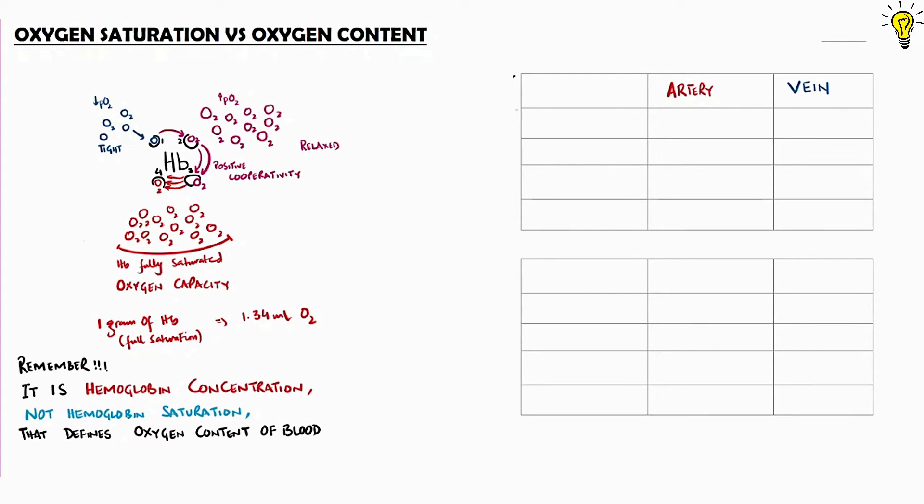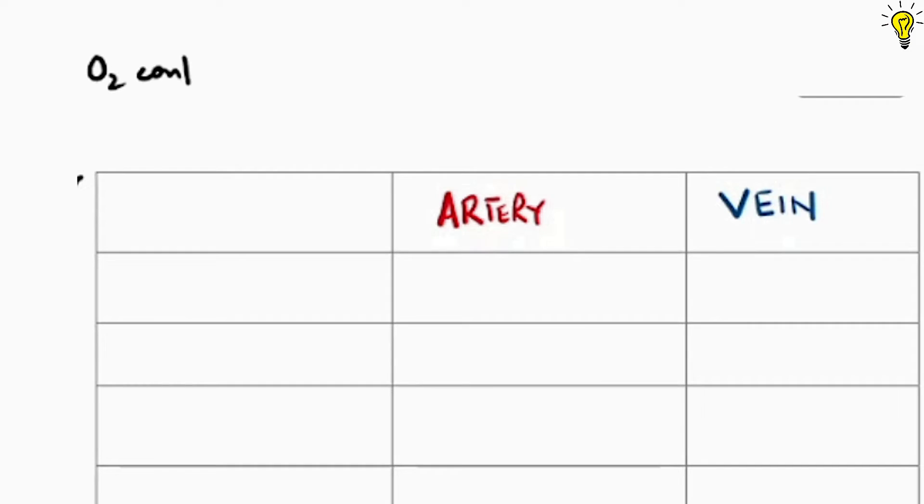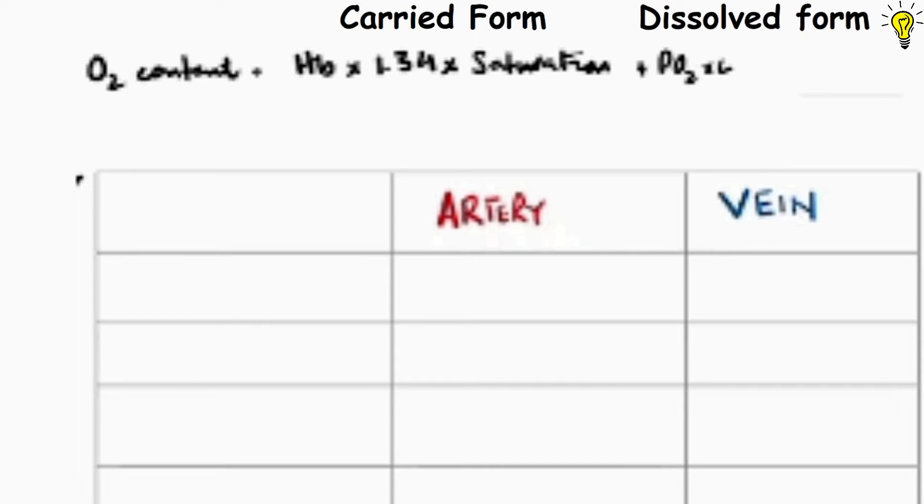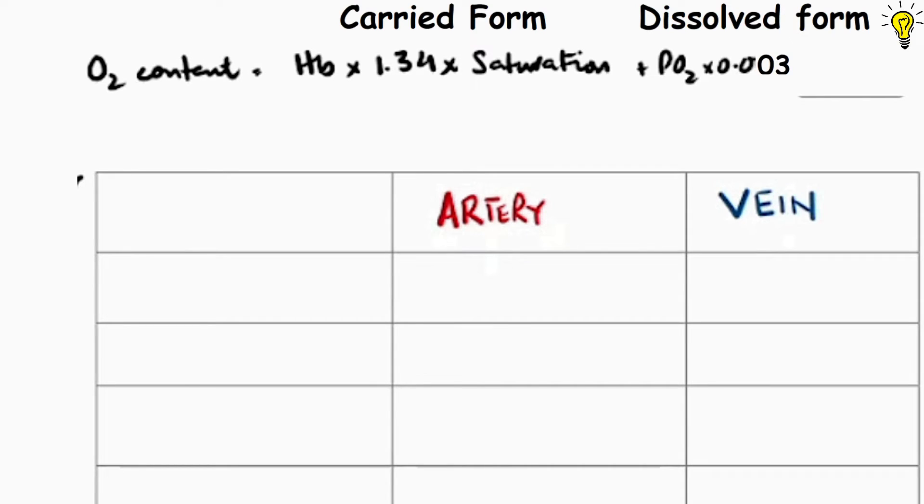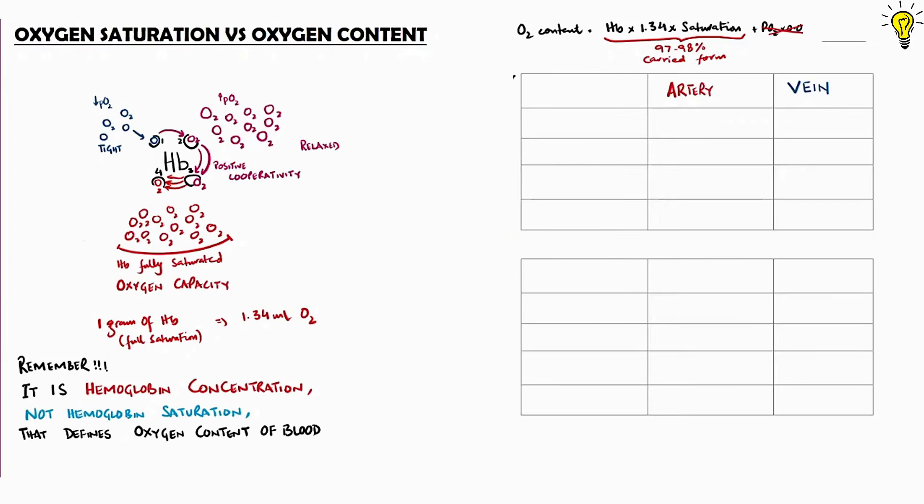Remember the oxygen content equation we discussed in previous video? Link in top right corner. So oxygen content is equal to hemoglobin into 1.34 into saturation plus PO2 into 0.003. Now this PO2 is the dissolved form which contributes only 1 to 2% to the total oxygen content. So for ease, let's just cut this portion of equation and concentrate on the carried form of oxygen in hemoglobin, which contributes 98% to the total oxygen content.